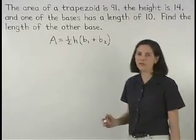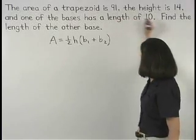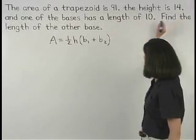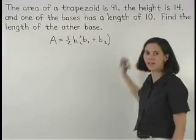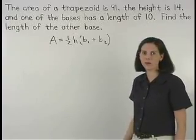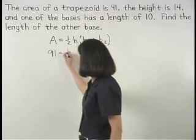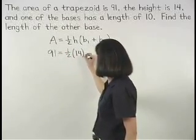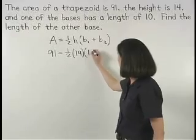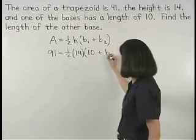We know that the area is 91, the height is 14, and one of the bases is 10. So we can set up the equation 91 equals one-half times 14 times parentheses 10 plus base 2.